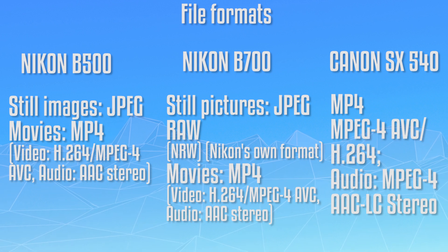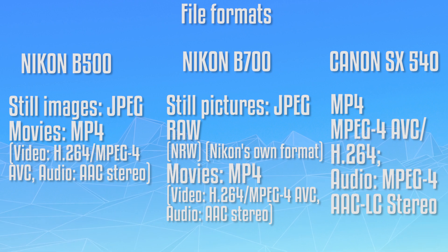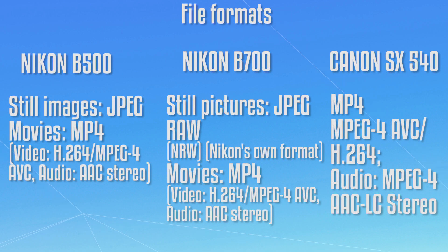The Canon SX 540 only offers up to 50x zoom, but the Nikon B700 offers zoom up to 60x, which you are not getting with the Nikon B500 either. So I will prefer the Nikon B700.